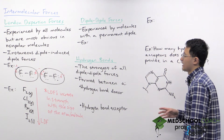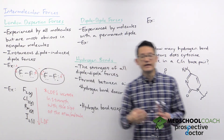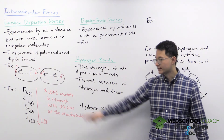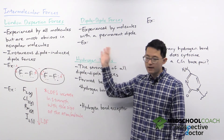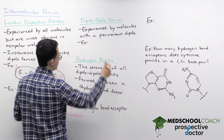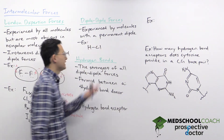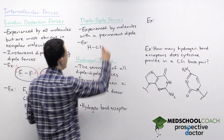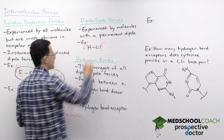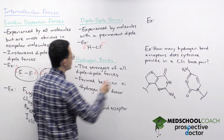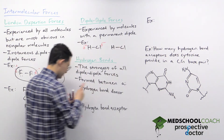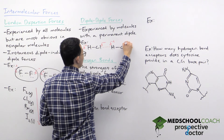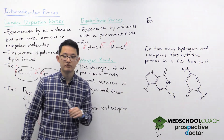Let's take a look at our next type of intermolecular force: dipole-dipole forces. These are interactions experienced by molecules with a permanent dipole — not like the instantaneous dipole which happens by chance. The dipole-dipole interaction involves molecules like HCl. In HCl, there's a permanent dipole because chlorine is more electronegative than hydrogen, so there is always a partial negative charge on the chlorine and a partial positive charge on the hydrogen. When other HCl molecules are present, they experience an attractive electrostatic interaction between the partial negative charges and the partial positive charges. That is the dipole-dipole interaction.